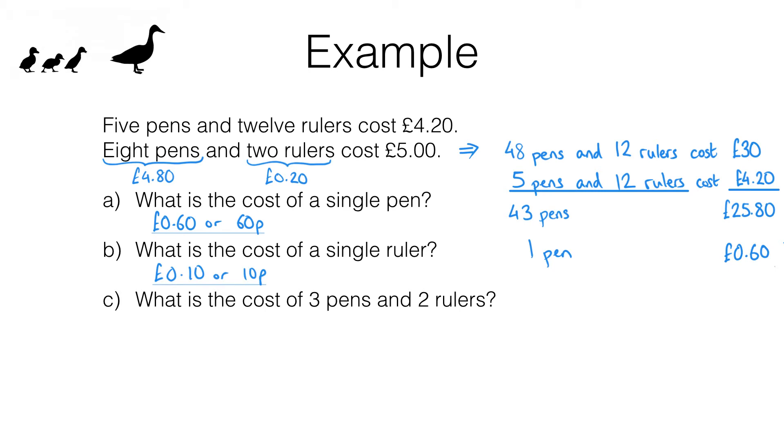Now we know the cost of a single pen and a single ruler, we can work out the cost of three pens and two rulers quite easily. Three pens is going to cost three lots of 60p and two rulers is going to cost two lots of 10p. If we work that out we get three lots of 60p which is £1.80, and then we need to add two lots of 10p which is 20 pence, and when we add those together we get two pounds and there's our answer.